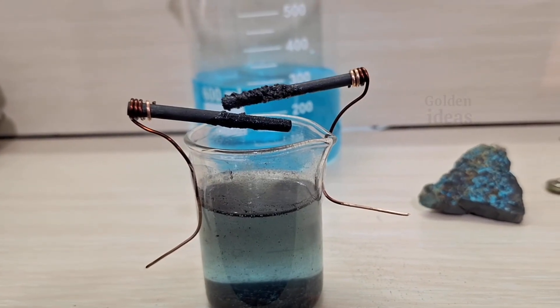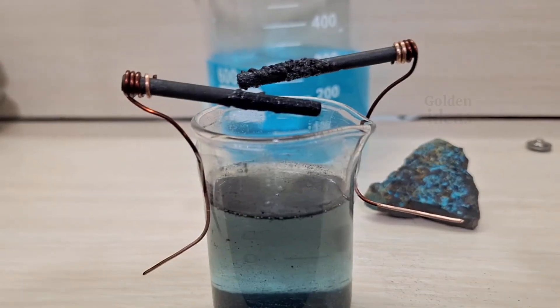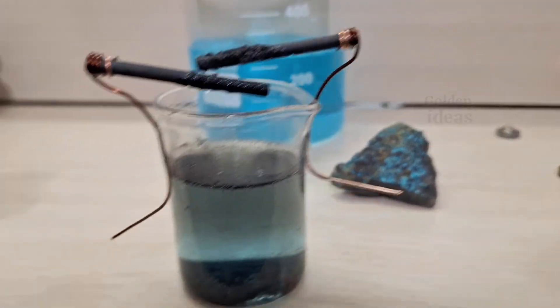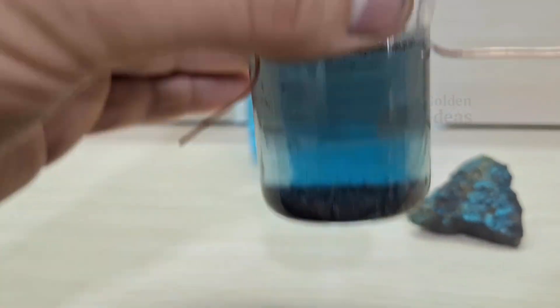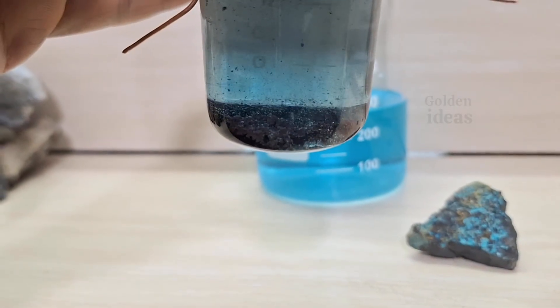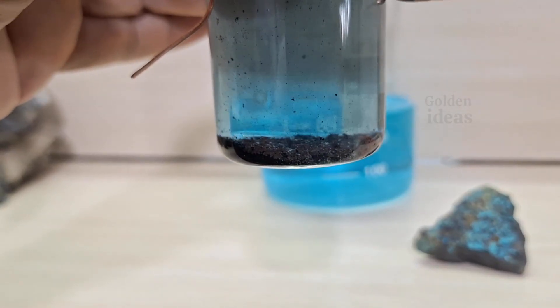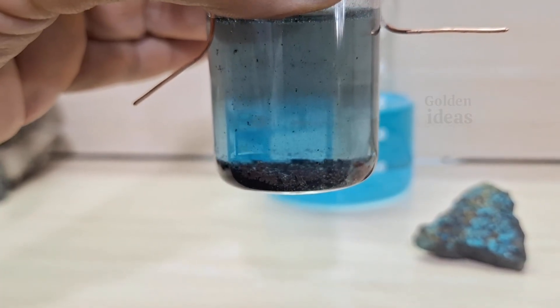In cyanide solution electrolysis, the conditions are slightly different, and I'll cover that in a separate video. As you can see, all the elements in the solution have precipitated as metallic powder, ready for melting.